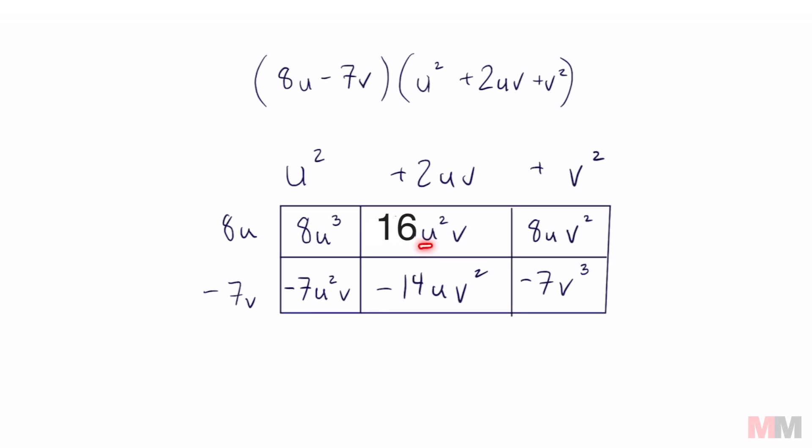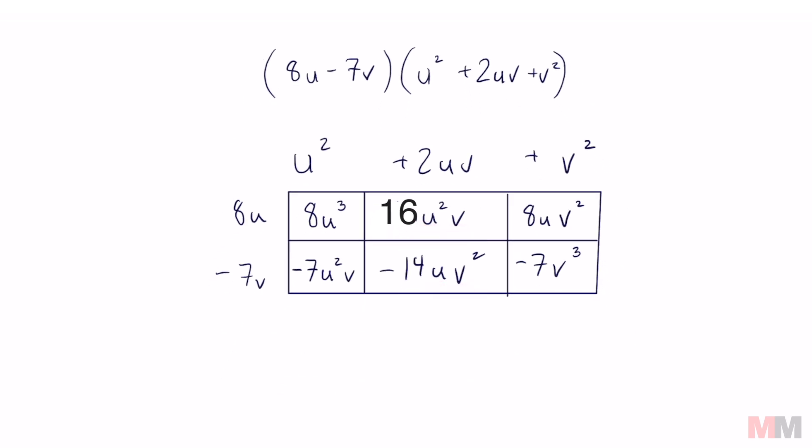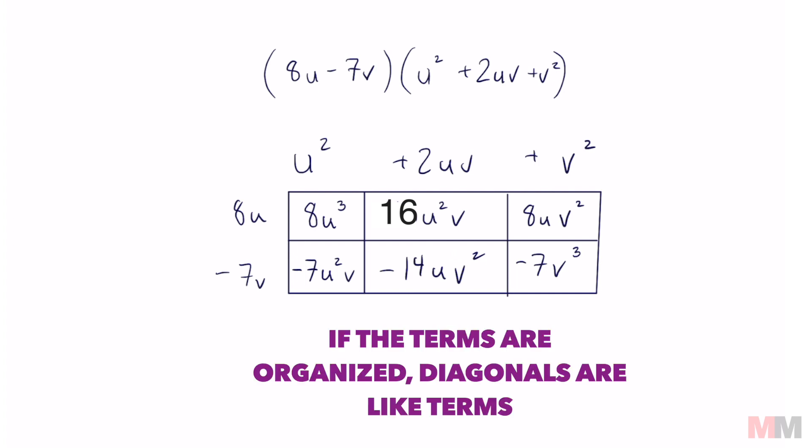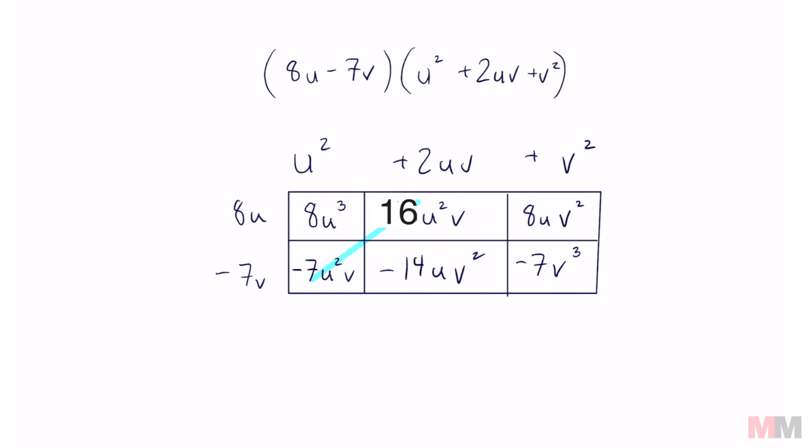Just because they all have uv like this doesn't mean that you can combine them all. The exponents got to match, so you can't combine this and this because that's got a 2 and this one has an imaginary 1. But the nice thing is it makes this pattern that every diagonal is going to be like terms. So we're going to start off with this one. That doesn't have anything like terms with it, so that's going to be 8u to the third power. These two if you combine, 16 minus 7 is going to be a positive 9u squared v. Once again take attention to the coefficients. 8 minus 14 is going to be negative 6uv squared and negative 7v to the third is by itself.